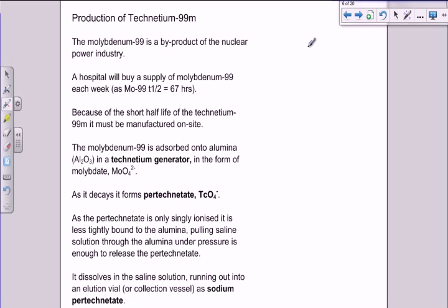So the next part of this is to look at how we actually produce technetium-99m. Now this has to be done in the hospital itself because of the short half-life. It can't be transported. So the technetium-99m must be manufactured on site. So what the hospital will do is it will buy, on a weekly basis, it will buy a supply of molybdenum-99.